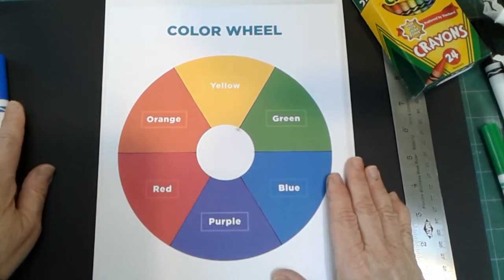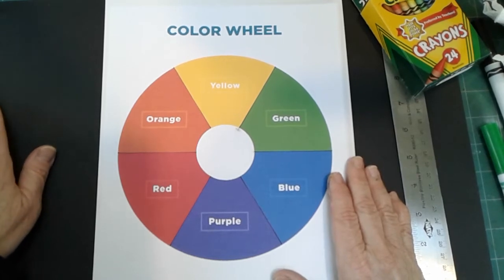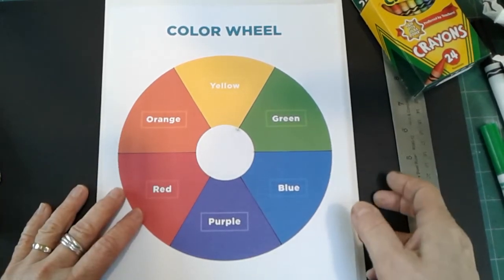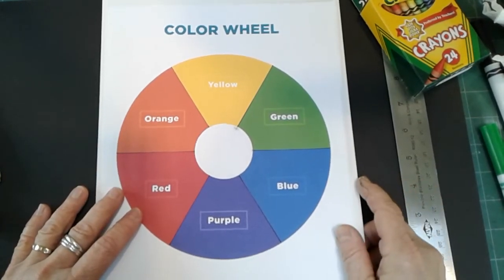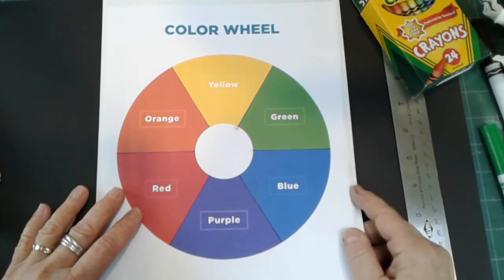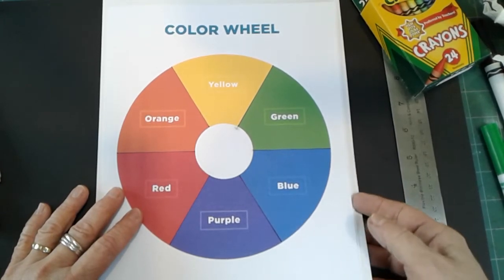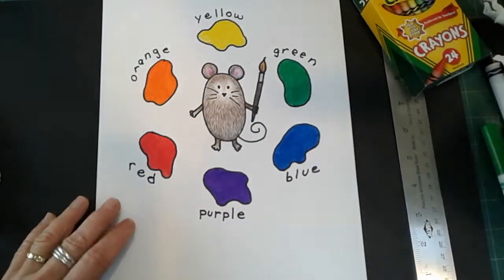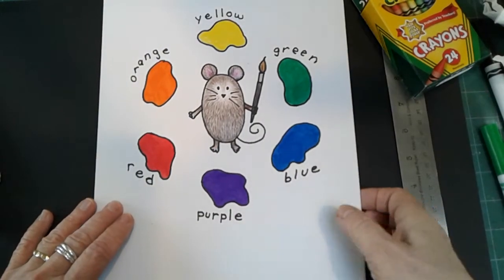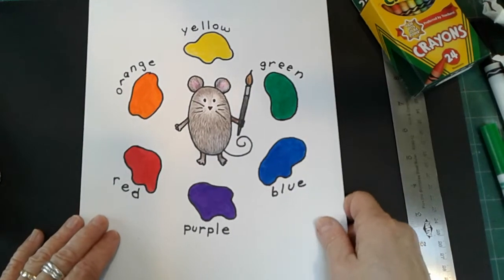Now in the video, you saw these three adorable white mice that were jumping into pots of paint. We are going to make a mouse color wheel today, and this is what it's going to look like.